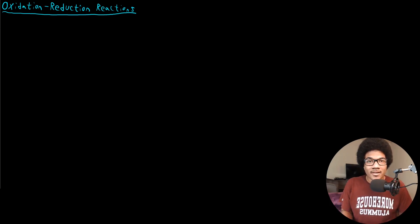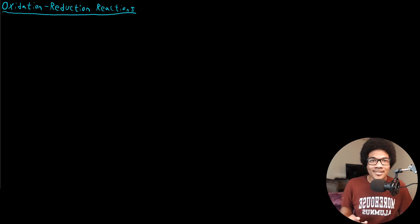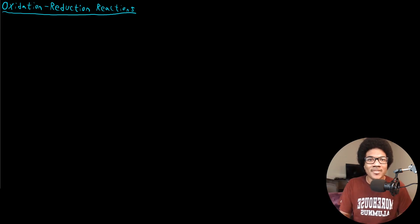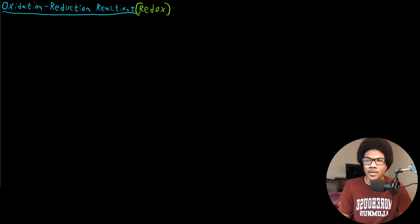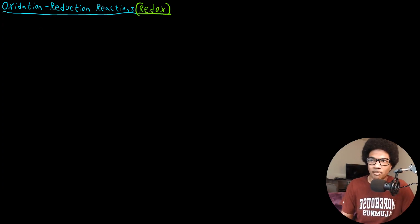In this video, we're going to discuss oxidation-reduction reactions. In the previous video, I mentioned that there are three classes of chemical reactions that virtually every reaction falls into. The first was precipitation reactions, the second was acid-base reactions, and we're going to cover the last one — oxidation-reduction reactions. These are also sometimes called redox reactions, a compound word built from oxidation and reduction.